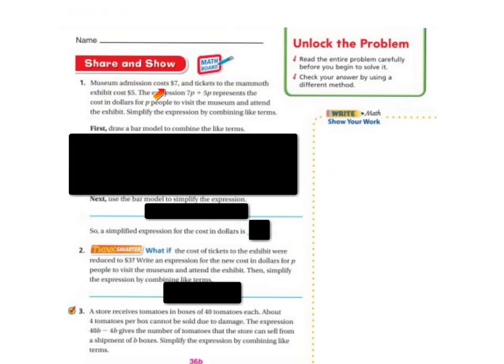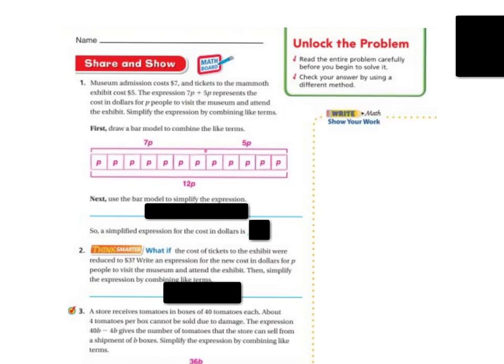So share and show. Museum admission costs $7, and tickets to the Mammoth exhibit cost $5. The expression 7P plus 5P represents the cost in dollars for P people to visit the museum and to attend the exhibit. Simplify the expression by combining the like terms. So we're going to combine the 7P and the 5P. And what are we doing? We're adding them.